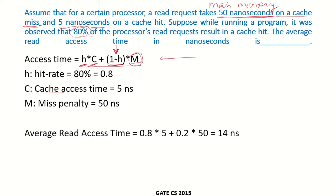Here, 50 nanoseconds is the miss penalty — the total time to access the cache and then main memory. The hit rate is 80%, so h = 0.8, and cache access time c = 5 nanoseconds. Substituting: 0.8 × 5 + (1 - 0.8) × 50 = 0.8×5 + 0.2×50, giving an average read access time of 14 nanoseconds.